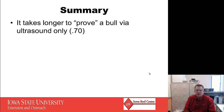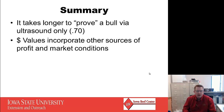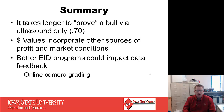It's important to know that it takes longer to prove a bull via ultrasound only — it's really good to have some actual carcass data to move those EPDs to higher accuracies quicker. Dollar value indexes will incorporate other sources of profit and use market conditions to help producers buy bulls that are more current to the market. Better EID programs in the future could really impact the amount of data feedback we get. Online camera grading has been great, and we need to work on ways to get that data back to the cow-calf producer. Hopefully this has been a good summary of the carcass traits we use in a selection program.